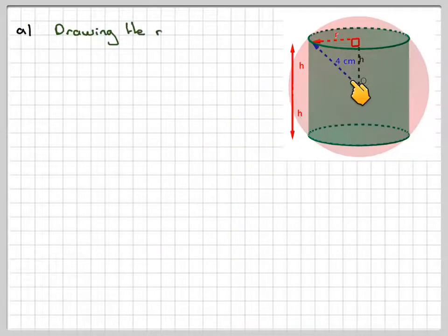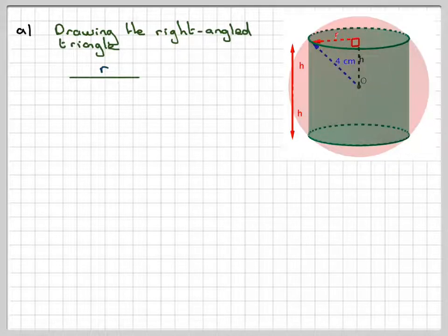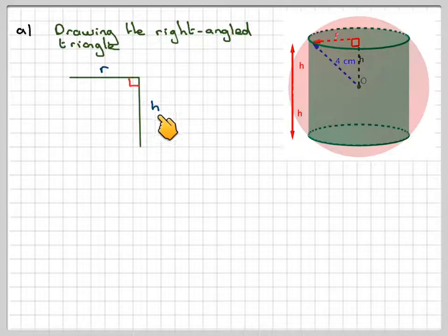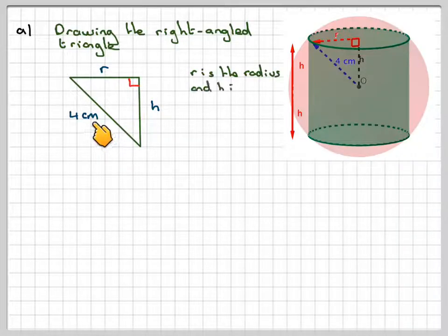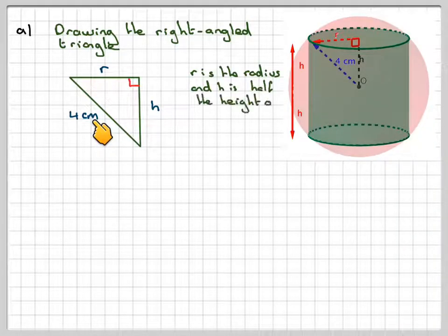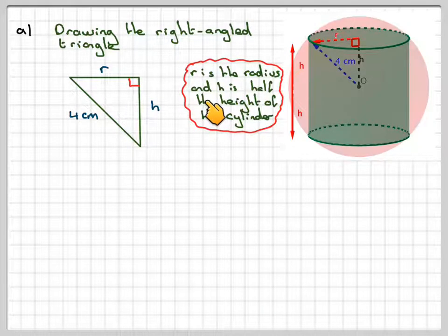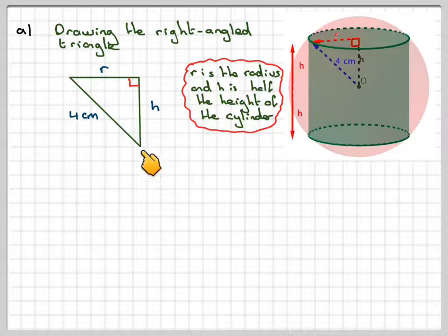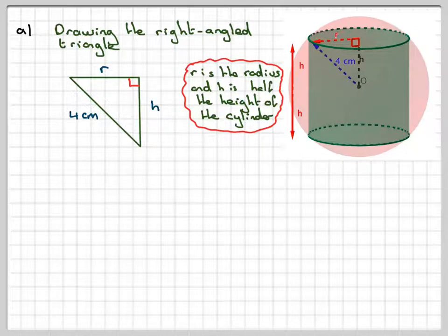So drawing that diagram out, drawing the right angle triangle out for ourselves, we've got to have the radius of the cylinder r, the height, half the height of the cylinder, which we're going to call h. And we want the radius of the sphere is going to be 4. So r is the radius, h is half the height of the cylinder. So both of these confer to the cylinder. This is the radius of the sphere.